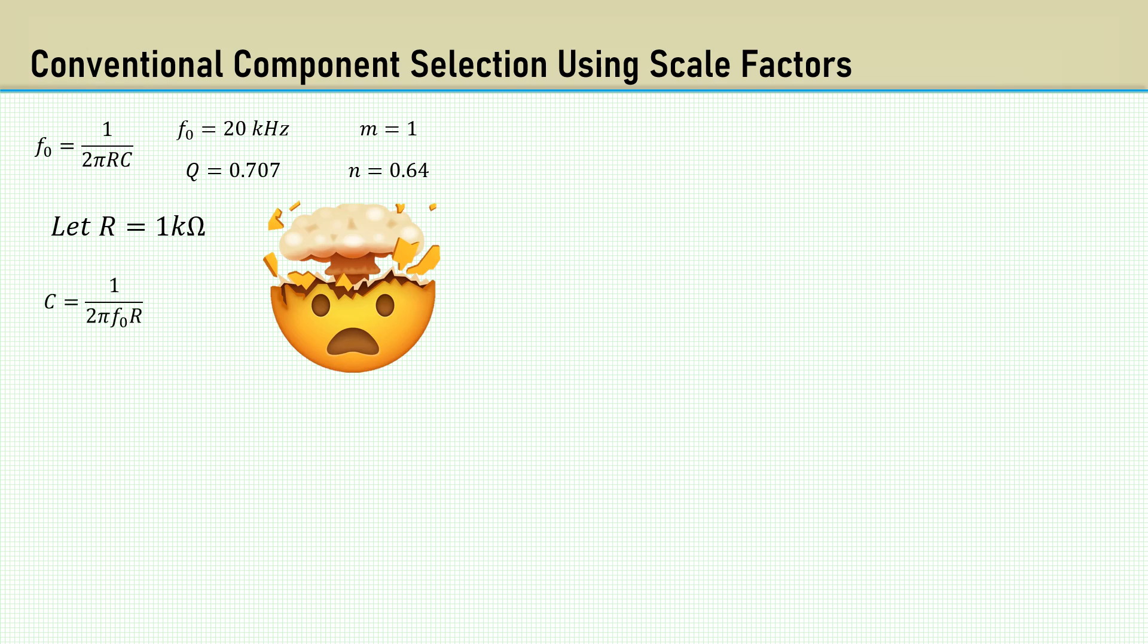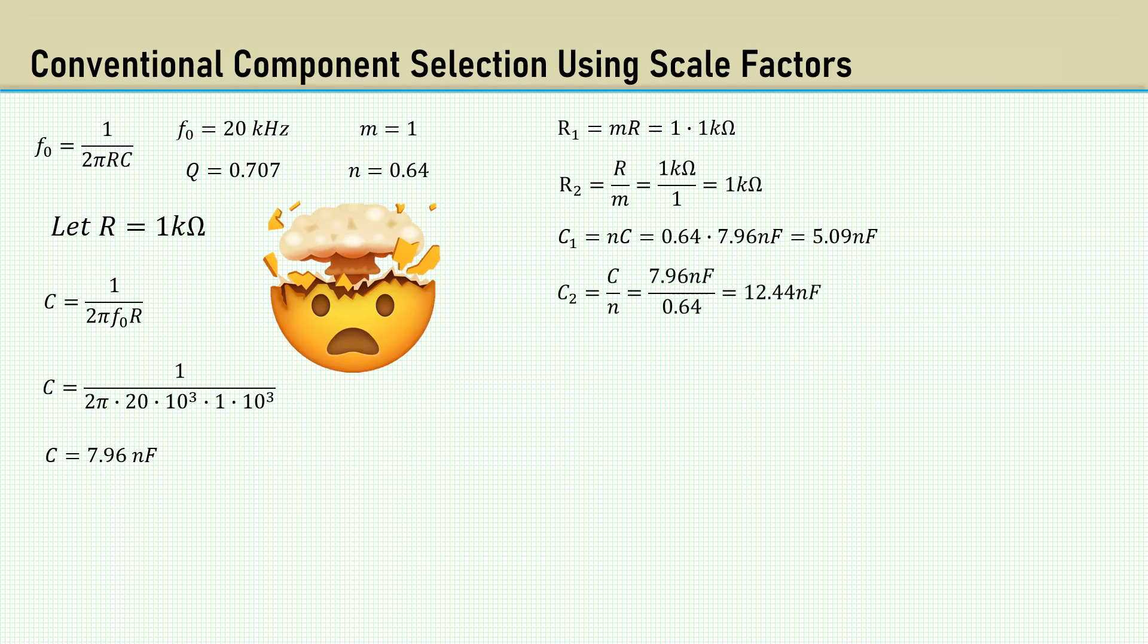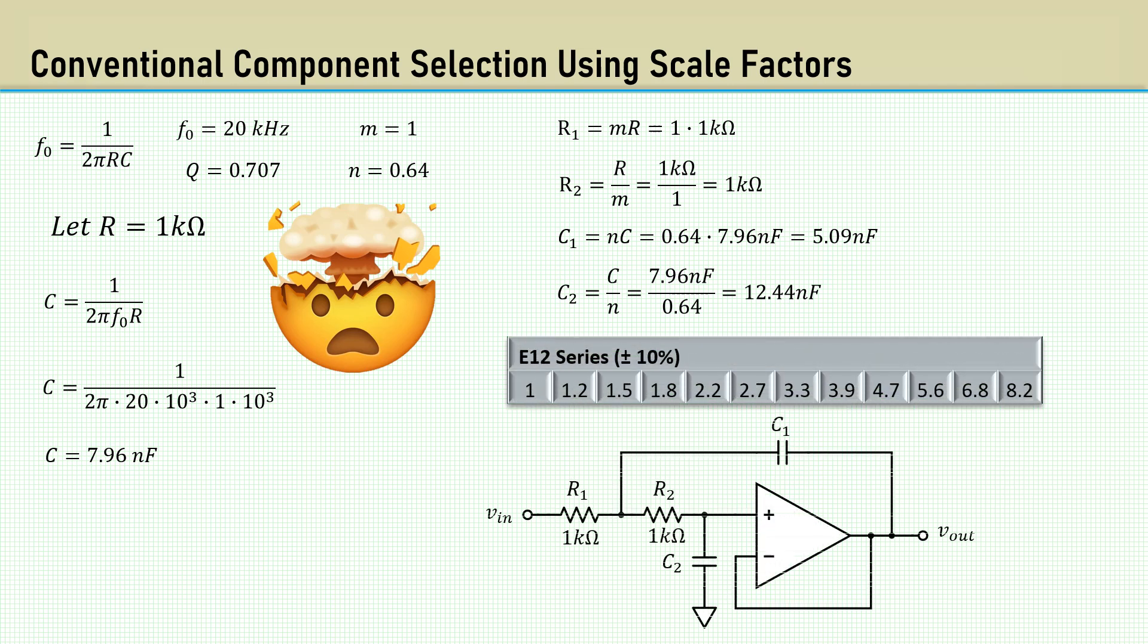Rearrange the frequency equation to solve for C. We get 7.96 nanofarads. Now that we have R and C, we can apply the scaling factors. M is 1, so R is 1k, and R2 is 1k. N times C gives us 5.09 nanofarads for C1. C divided by N gives us 12.44 nanofarads. We then select the closest value from the E12 series, which is 12 nanofarads for C1 and 4.7 nanofarads for C2.